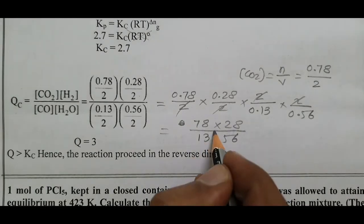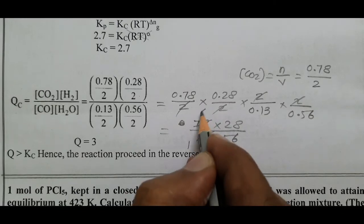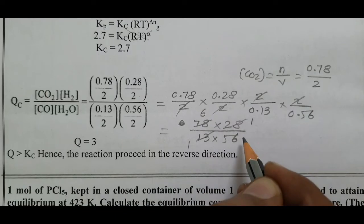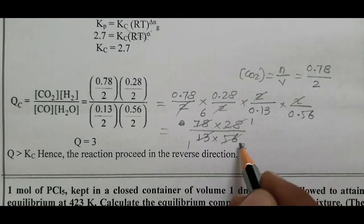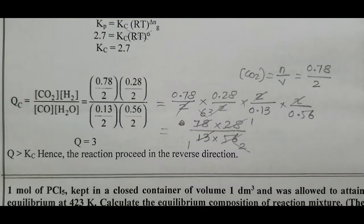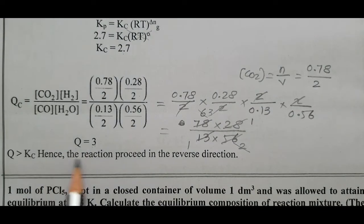Calculating: 78 × 28 = 2184 and 13 × 56 = 728. Q = 2184/728 = 3. Since Q = 3 is greater than Kc = 2.7, the reaction proceeds in the reverse direction.